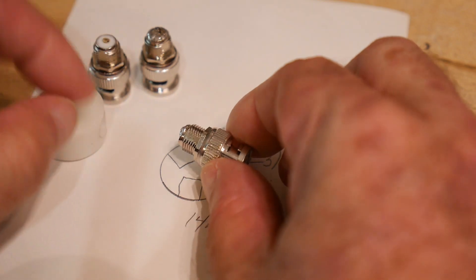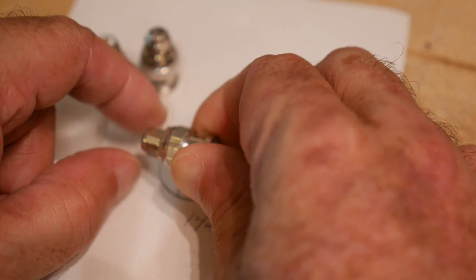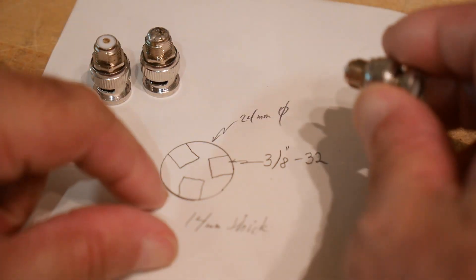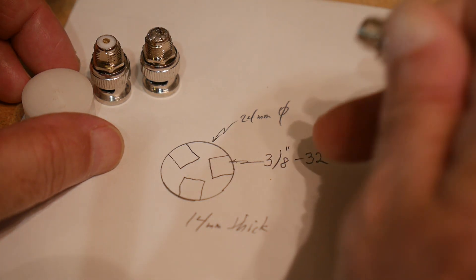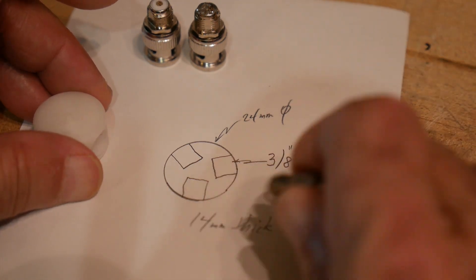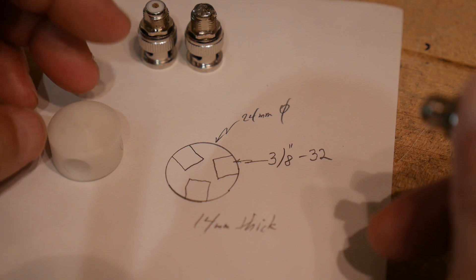So I got out a thread gauge and I measured the pitch of these and they're 32. Even though it's a 3/8 diameter, it's a 32 thread which is ultra fine thread, not fine thread. So it is a thing and you can buy taps - I don't have one so I've had to order one.